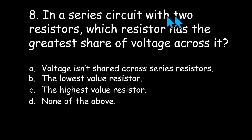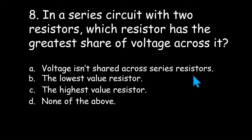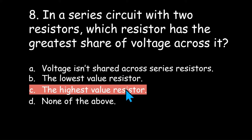In a series circuit with two resistors, which resistor has the greatest share of the voltage across it? Voltage isn't shared across the resistors, the lowest value resistor, the highest value resistor, or none of the above? The answer is C: in a series circuit with multiple resistors, the highest value resistor — the highest ohms resistor — is going to have the most voltage across it. That's a very important concept to understand.